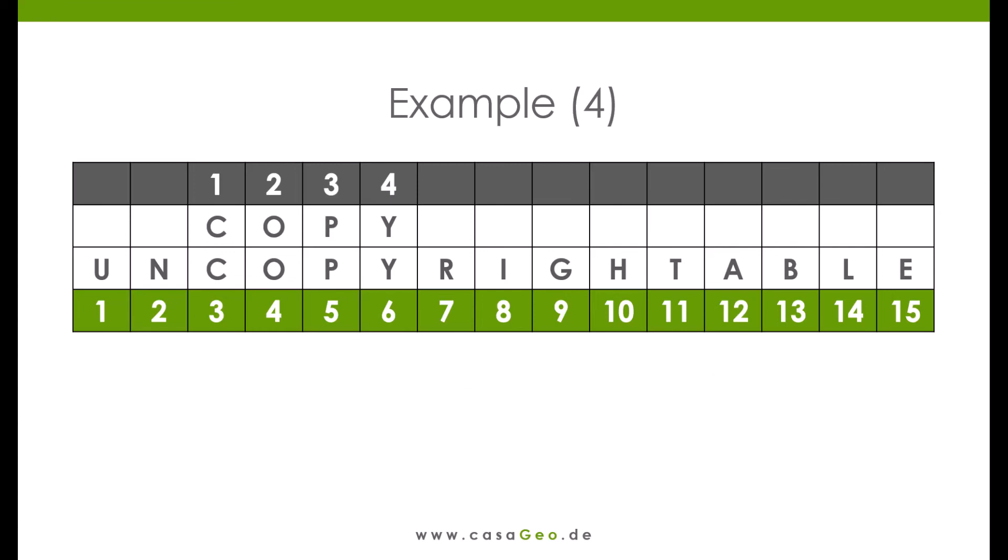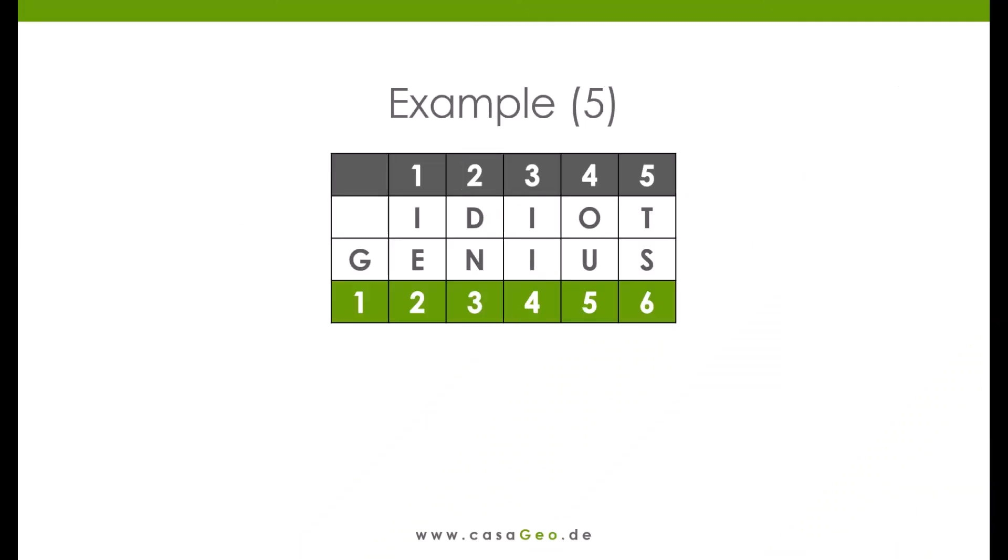Finally, one last example. Let's compare the two words idiot and genius. The word idiot is five, and the word genius is six characters long. We have to make five changes each and get as a result, five minus five for idiot, plus six minus five for genius. Divided by five plus six equals eleven. One eleventh equals a score of nine.